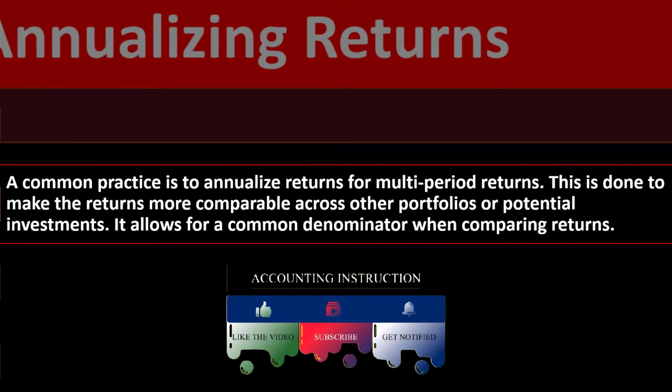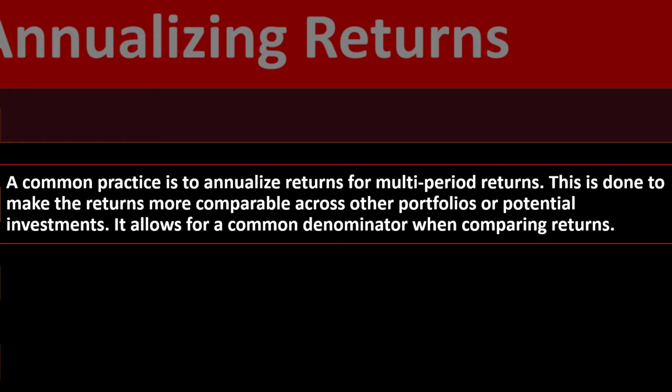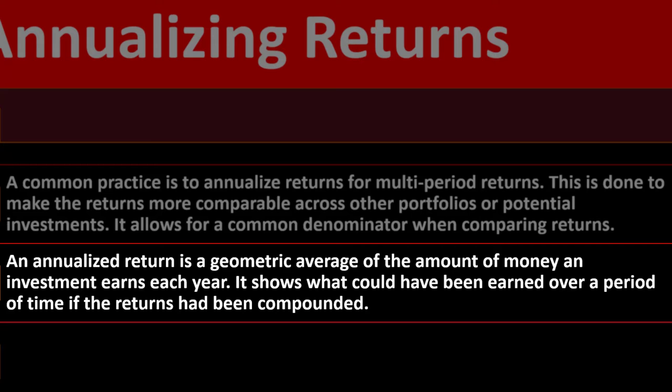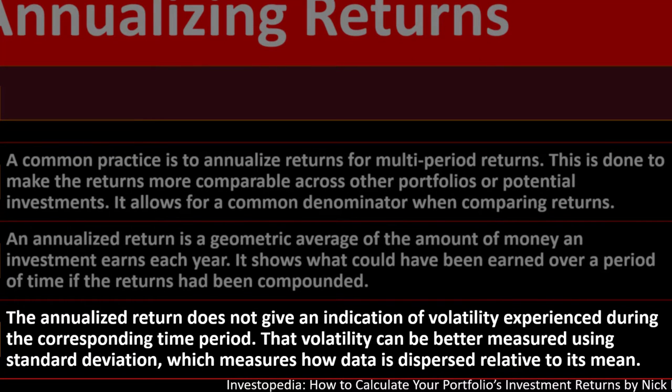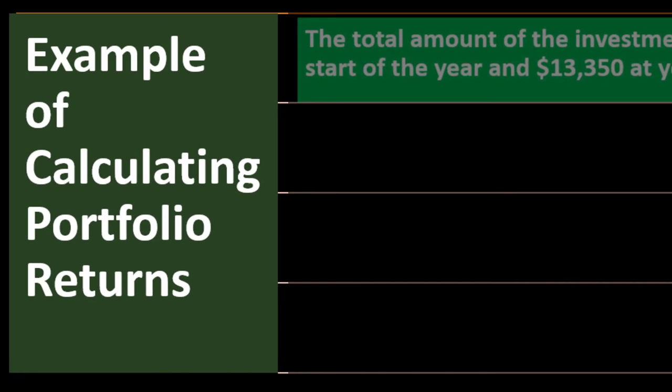Analyzing returns: a common practice is to annualize returns for multi-period returns. This is done to make the returns more comparable across other portfolios or potential investments. It allows for a common denominator when comparing returns. An annualized return is a geometric average of the amount of money an investment earns each year. It shows what could have been earned over a period of time if the returns had been compounded. The annualized return does not give an indication of volatility experienced during the corresponding time period. Volatility can be better measured using standard deviation, which measures how data is dispersed relative to its mean.